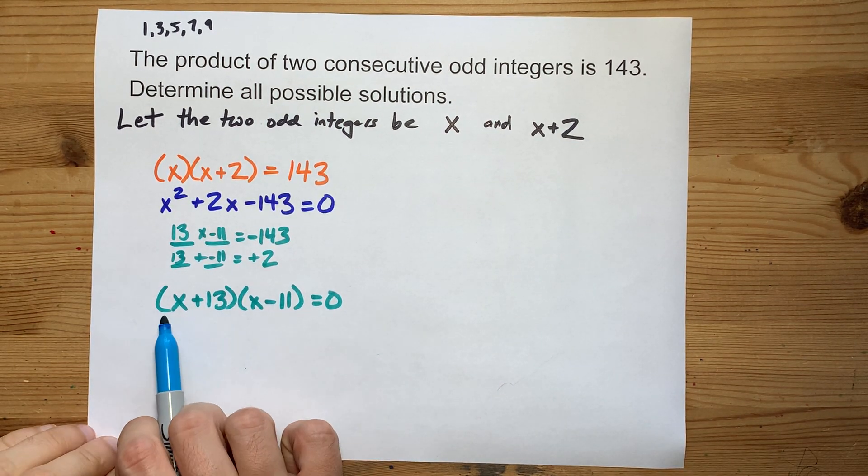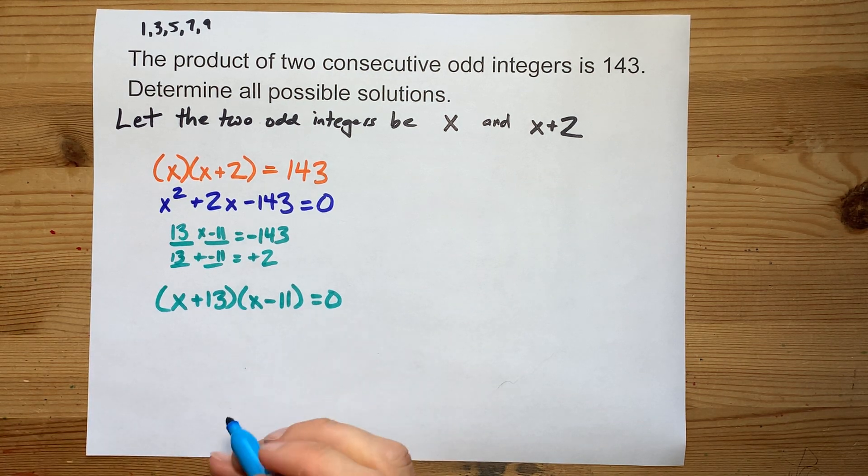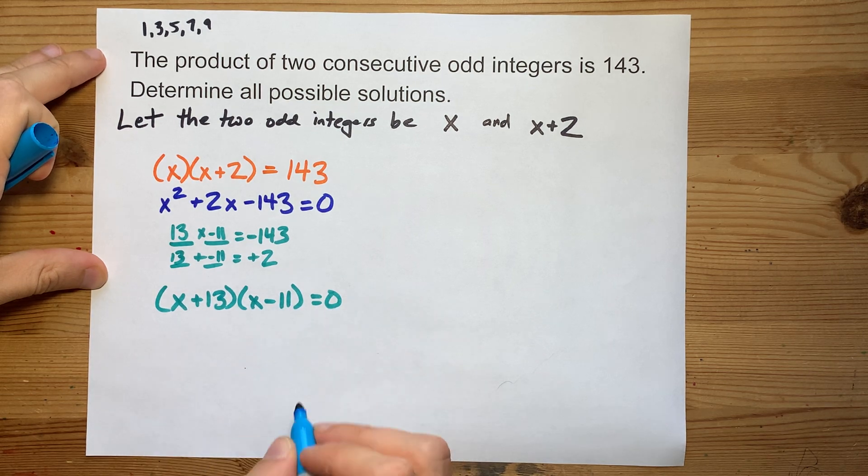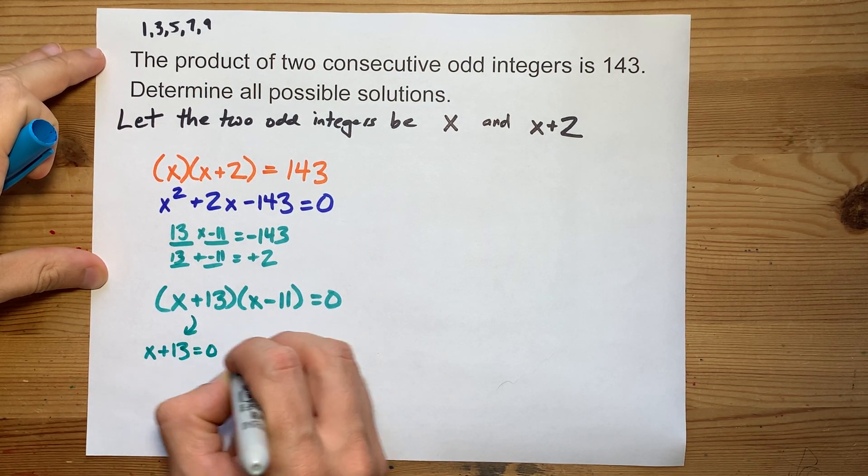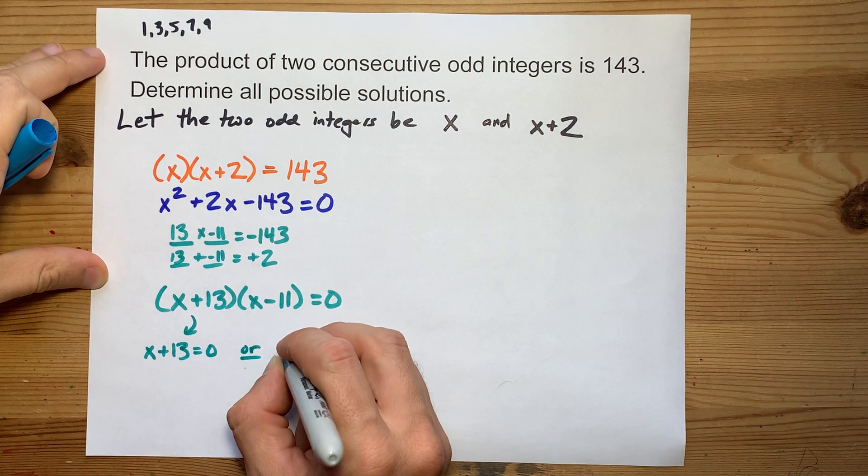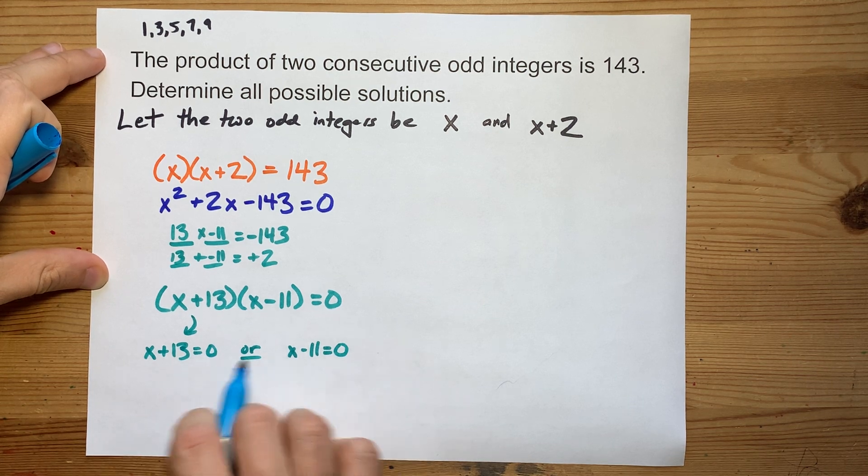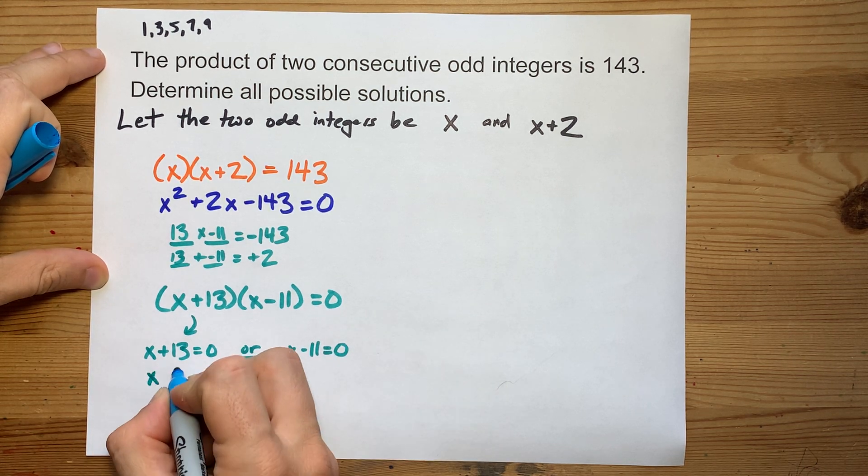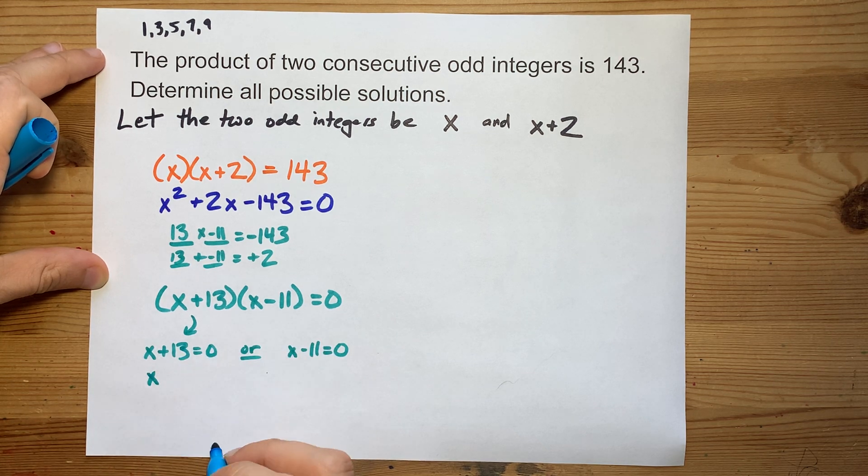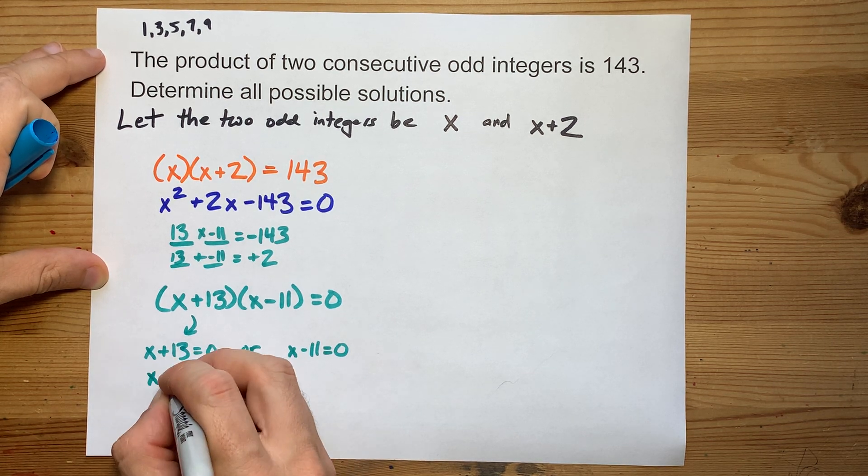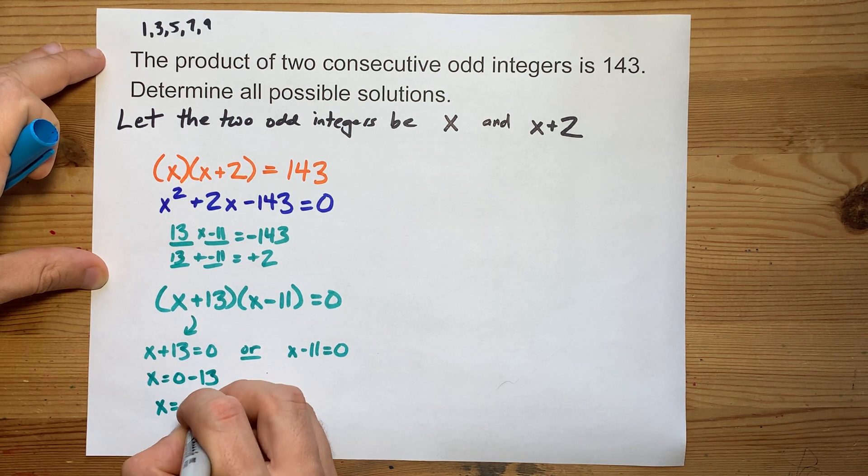Now, we have this factor times this factor equals zero. That means if two numbers multiply to make zero, then either x plus 13 equals zero, or x minus 11 equals zero. It's your job to solve for x in both of these cases. Here, something plus 13 is zero. You can move the 13 to the other side. Zero minus 13, so I get negative 13 out of that.